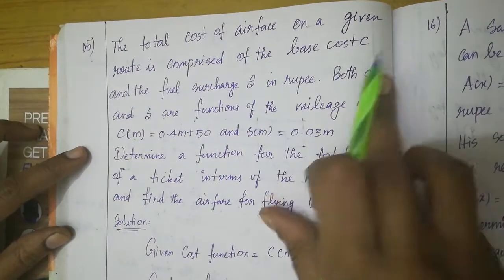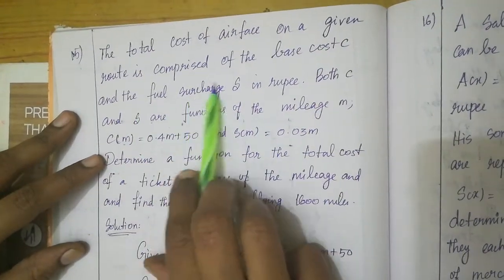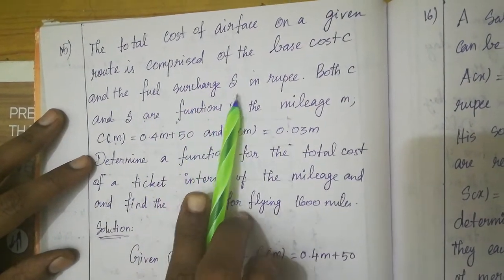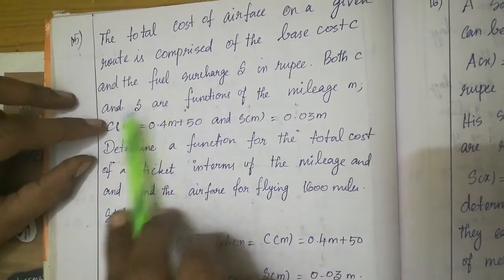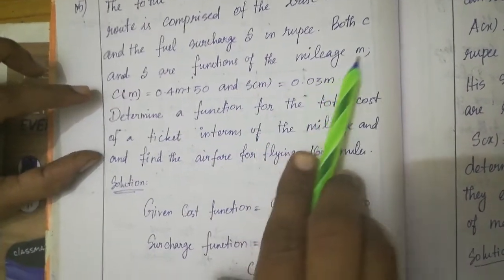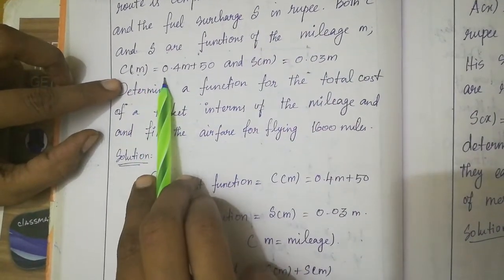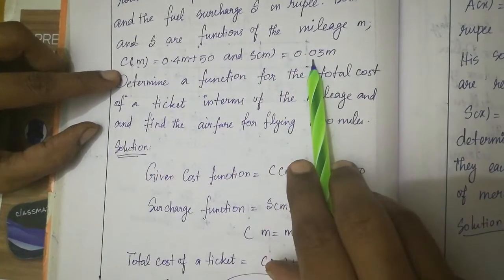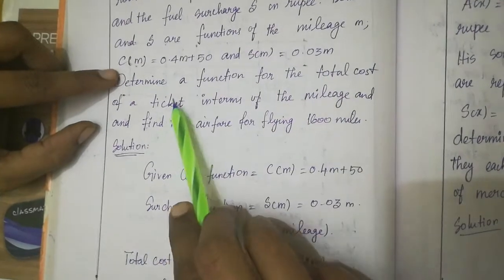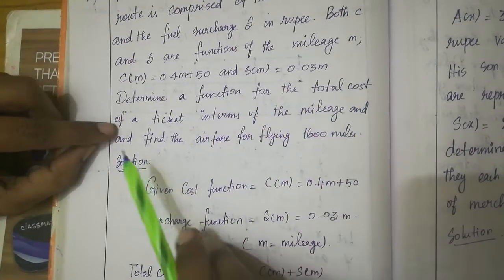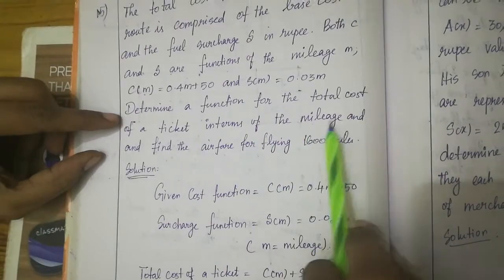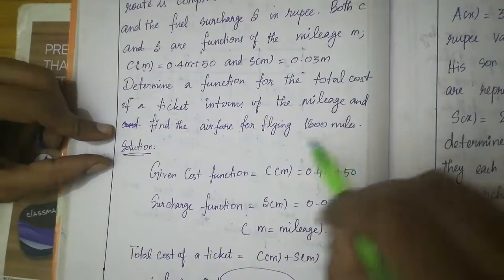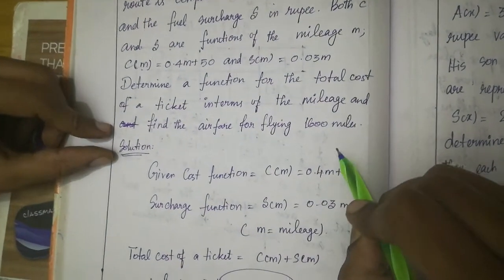The total cost of airfare on a given route is comprised of the base cost C and the fuel surcharge S in rupees. Both C and S are functions of the mileage M. C of M equals 0.4M plus 50. S of M equals 0.03M. Determine the function for the total cost of a ticket in terms of mileage and find the airfare for flying 1600 miles.